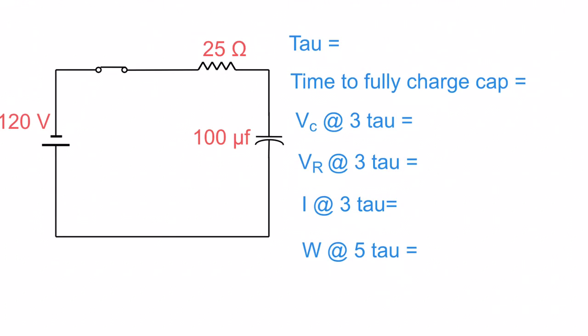What we're going to do is work out tau. So it's the same thing as an inductor. It takes 5 tau to get up to a full charge capacitor. We're going to work out what the tau is, the time to the full charge of the capacitor.